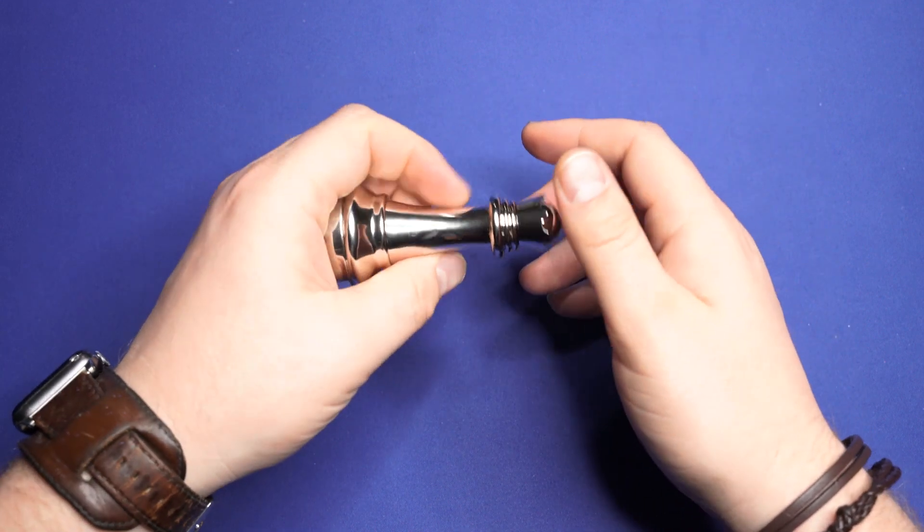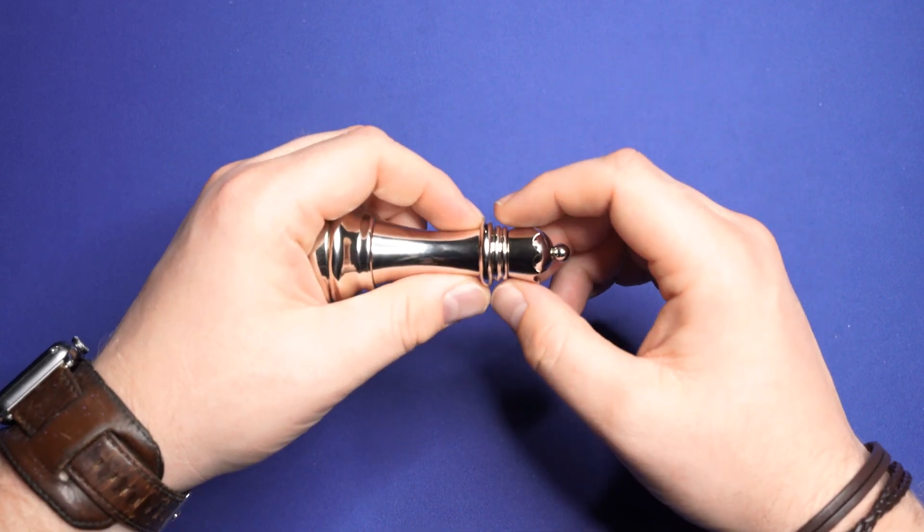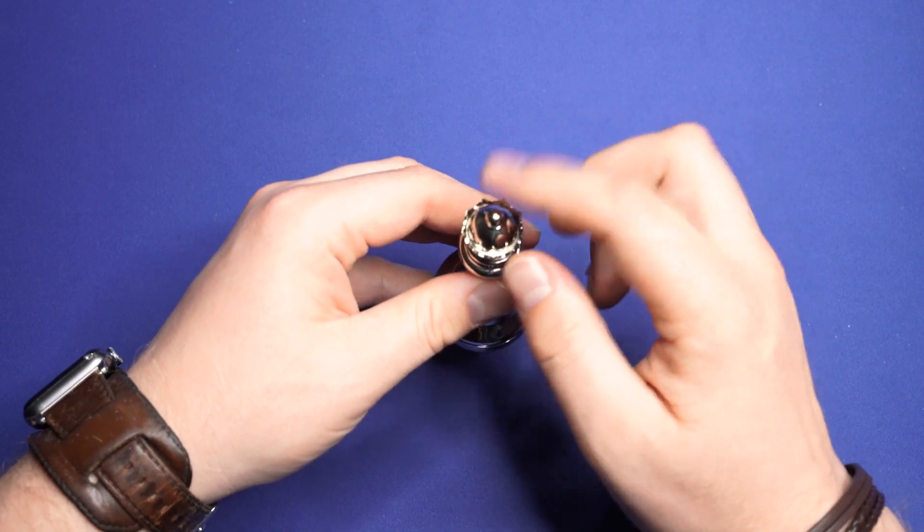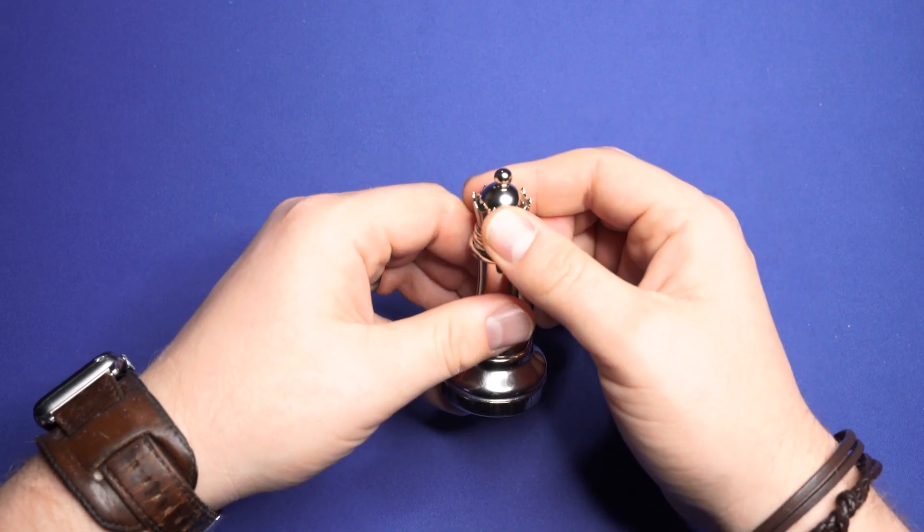So, the way it works is, first things first, you're going to pull the tip of the Queen piece up.